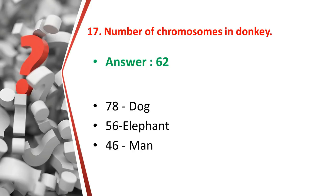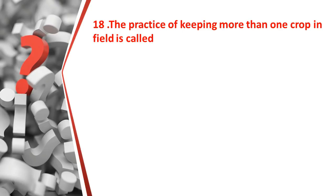Related biology facts about chromosomes: dog has 78 chromosomes, donkey has 62 chromosomes, elephant has 56 chromosomes, and humans have 46 chromosomes. So the increasing order of chromosomes: man 46, elephant 56, donkey 62, dog 78.